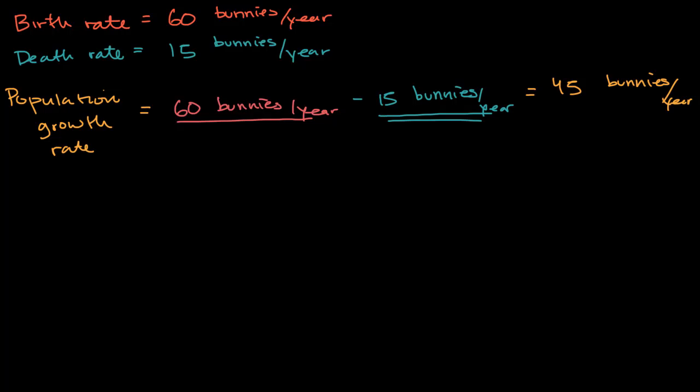In a previous video, we started thinking about things like population growth rate and how it relates to the birth rate and the death rate within a population. We related that to some of the seemingly complex formulas that you might see on an AP Biology formula sheet.